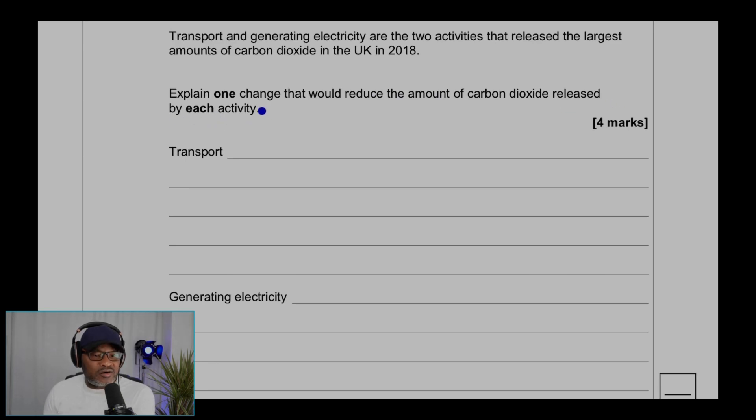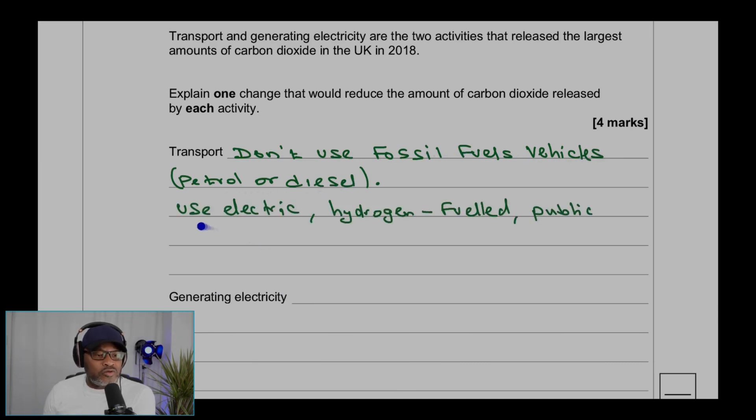This is for four marks. For transportation: don't use fossil fuel vehicles such as petrol or diesel. Use electric, hydrogen fuel, or public transportation vehicles, or cycle or walk.